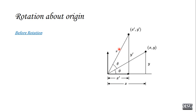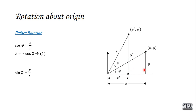Before performing rotation: cos phi equals the adjacent side divided by hypotenuse. The adjacent side is x and hypotenuse is r, so cos phi equals x over r, giving us equation 1: x = r cos phi. And sin phi equals opposite side divided by hypotenuse; opposite side is y, so equation 2: y = r sin phi.